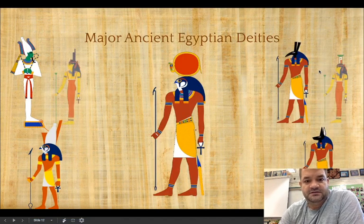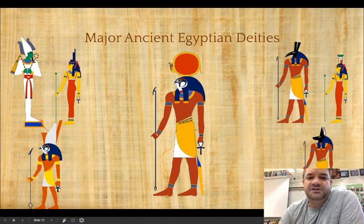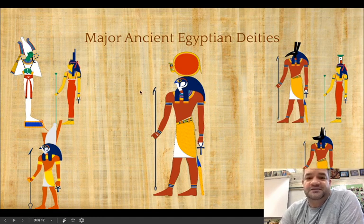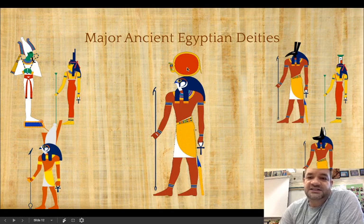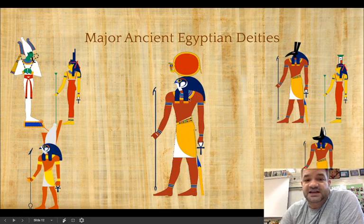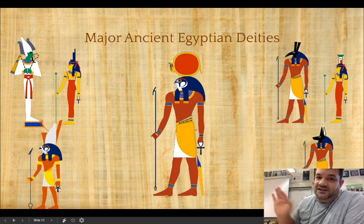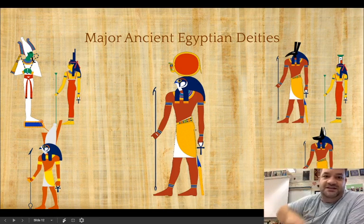Ancient Egypt had a plethora of gods - they were polytheistic with a whole pantheon. Some key players: in the center we have Ra, the sun god, with the sun disc atop his head and a falcon's head. He rides a boat as the sun every day, and at night he travels through the Duat - the underworld - passing through different gates and monsters, then is reborn every day as the cycle continues.